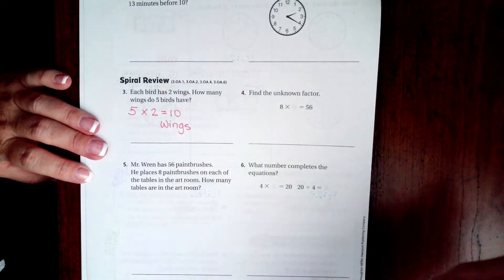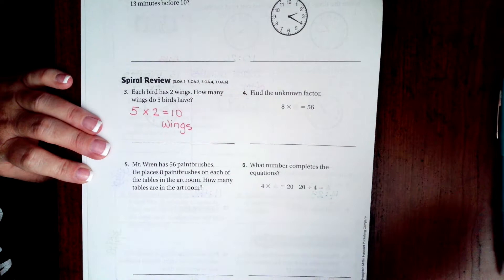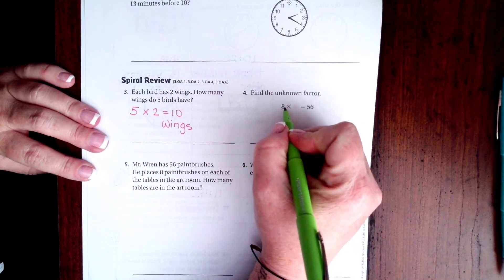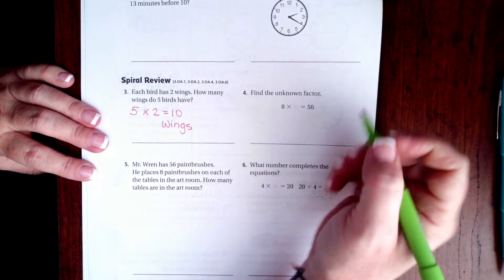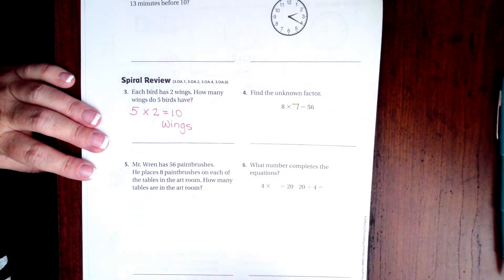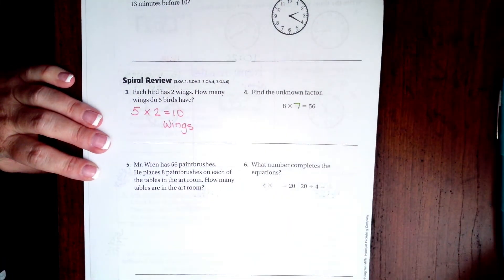Find the unknown factor. 8 times what is 56? Well, 8 times 7 is 56.